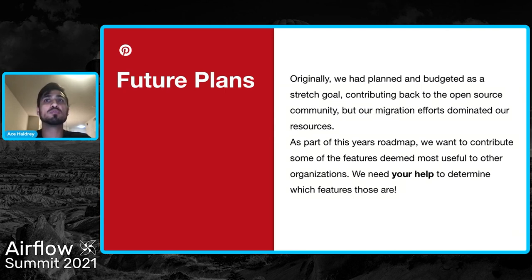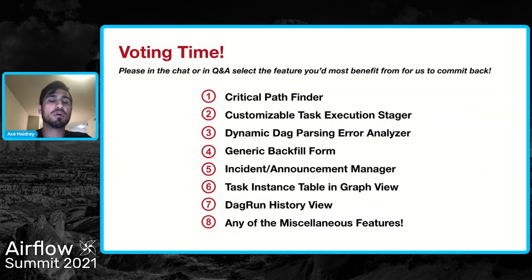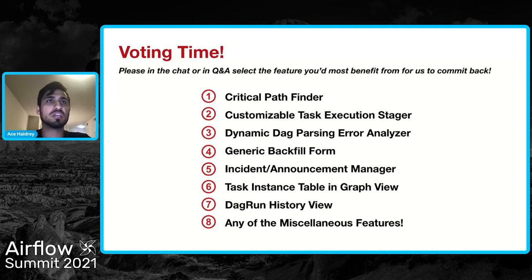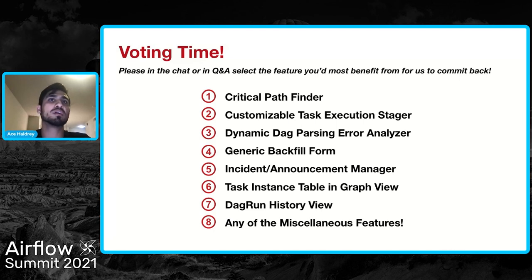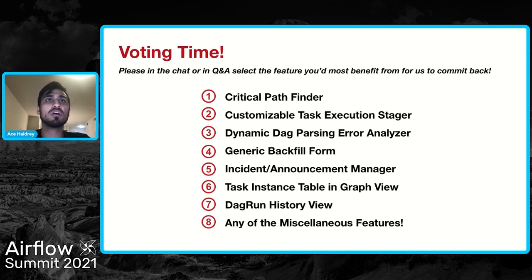But this year we have roadmaps in Q3 and Q4 to talk more about open sourcing, and this is where we can really use your help. For whoever's online, it would be really great if you could let us know what things your organization would most benefit from. Would it be the critical path finder? If so, put number one. If it's the DAG run history view, put number seven. We do have goals to get all of these things out, but hearing from you will let us know what matters most to your organizations to help empower your users.